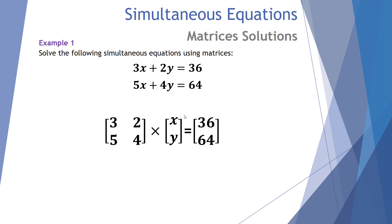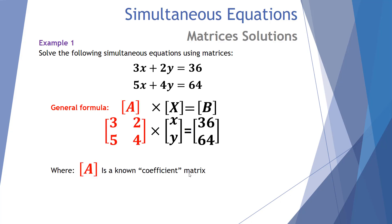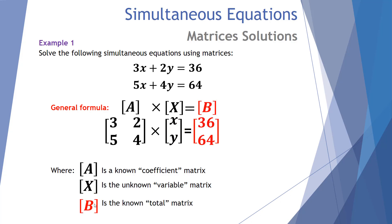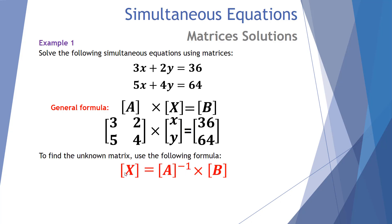Now we're looking at how we can use these matrix expressions to solve a set of simultaneous equations. Here's our general formula: matrix A is the coefficient matrix — the numbers in front of the x's and y's. Matrix X is the unknown variable matrix — that's what we're trying to solve, the values for x and y. Matrix B is the total matrix, the end result. The general rule is: when we have a coefficient multiplied by an unknown giving a total, the unknown X equals the inverse of A — A to the negative one — multiplied by B, in that order.